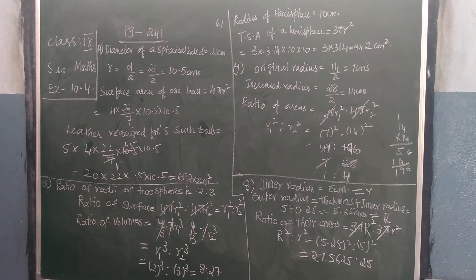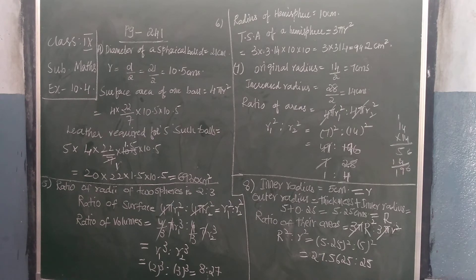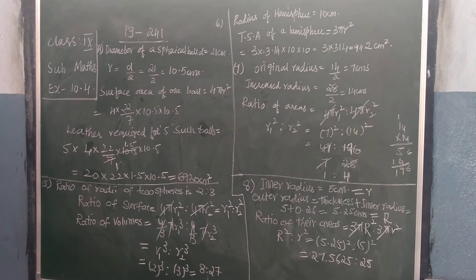What is the 4th problem? See, the diameter of a spherical ball is given. That is D is equal to 21 cm. Then from that I will find out the radius. Radius is equal to diameter divided by 2, that is 10.5.